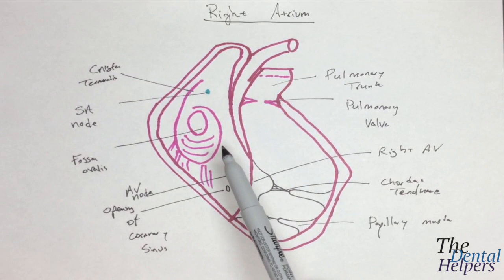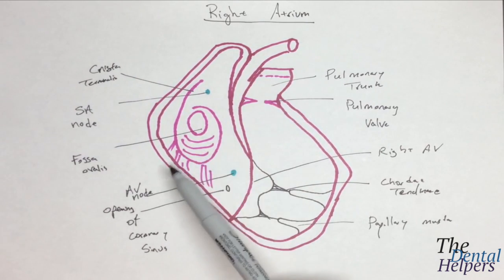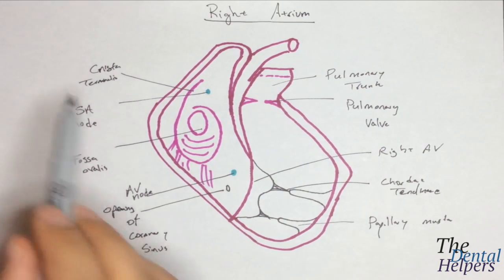Or these kind of folds that are seen on the wall of the heart. And so they're small muscular ridges or grooves on the surface that passes from the atrium proper into the atrial appendage.